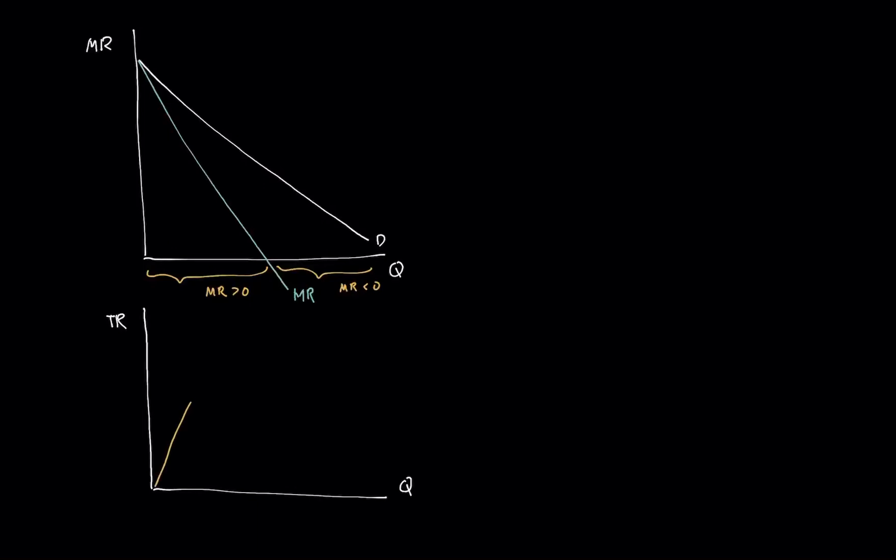It's increasing until that point where marginal revenue is equal to zero. Then it already starts decreasing after that point. So we call this total revenue.